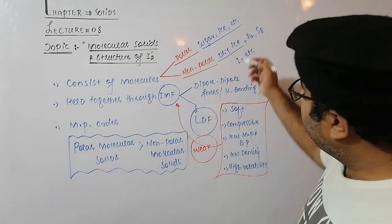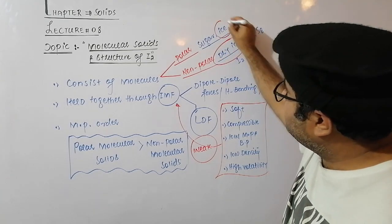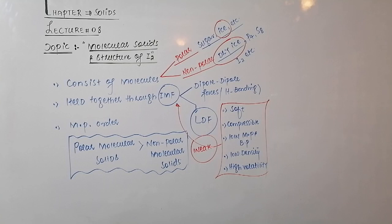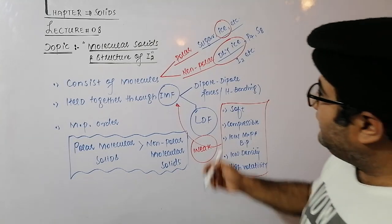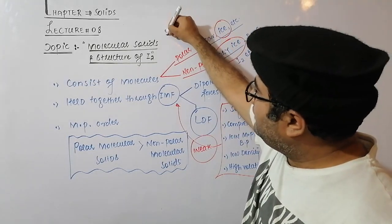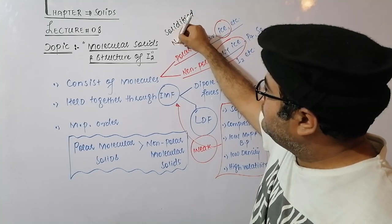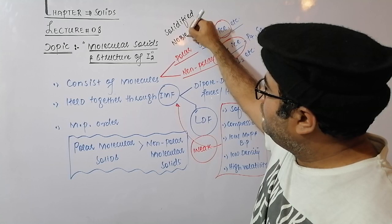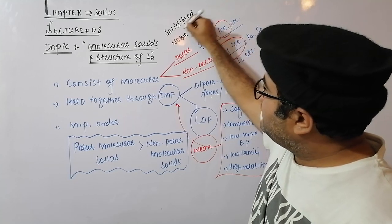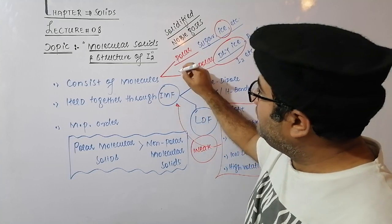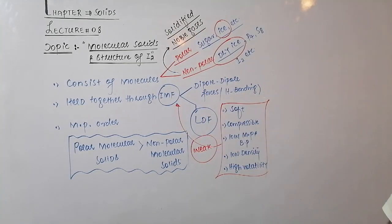An important point: ice is an example of a polar molecular solid, while dry ice is an example of a non-polar molecular solid. Also, all solidified noble gases are examples of non-polar molecular solids. These are important points frequently asked in final exams as MCQs and short questions.